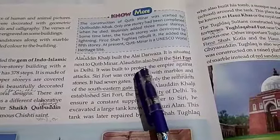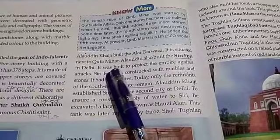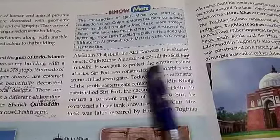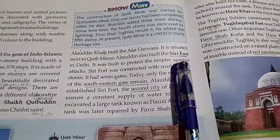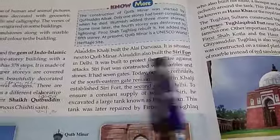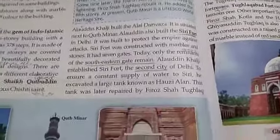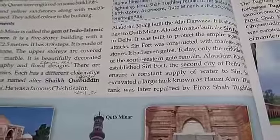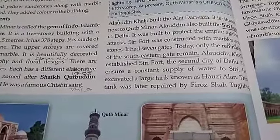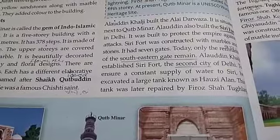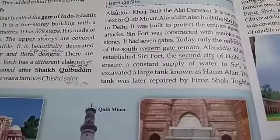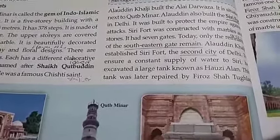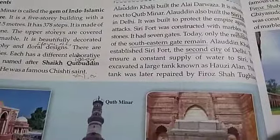The Alai Darwaza is situated next to the Qutub Minar. Alauddin Khalji also built the Siri Fort in Delhi. It was built to protect the empire against Mongol attacks. According to legend, the name 'Siri' was given to the fort because its foundation was built on the severed heads — 'sir' meaning head in Hindi — of about 8,000 Mongol soldiers killed in battle.